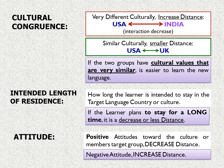The seventh social factor is intended length of residence — how long the learner intends to stay in the target language country. If the learner plans to stay for a long time, there is less distance. The eighth social factor is attitude. We have to maintain positive attitudes toward the target cultural group, which decreases the distance. A negative attitude increases the distance.